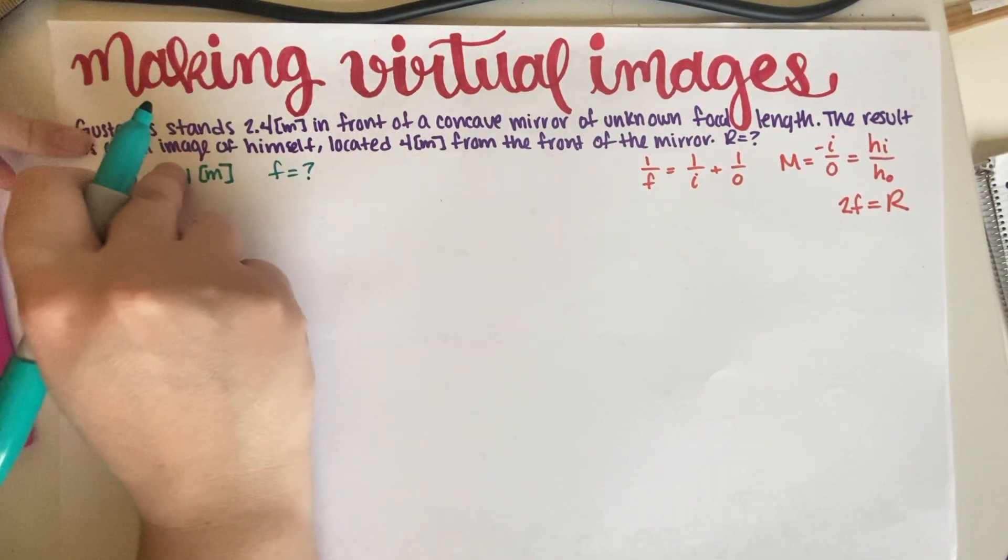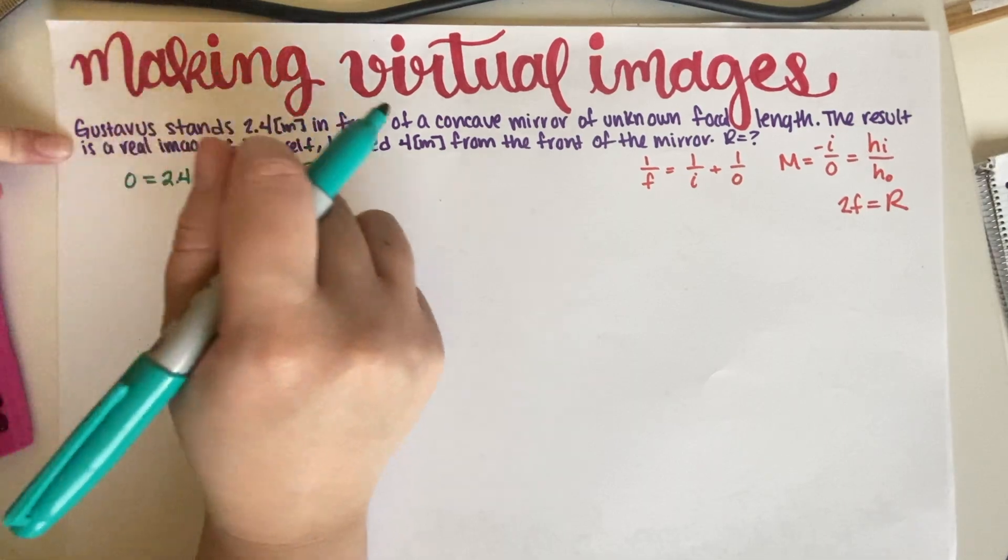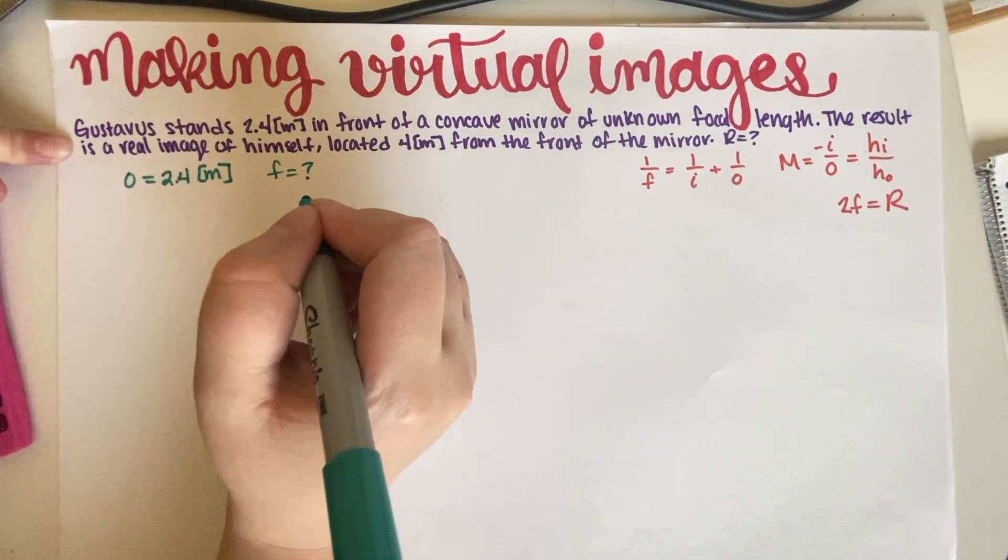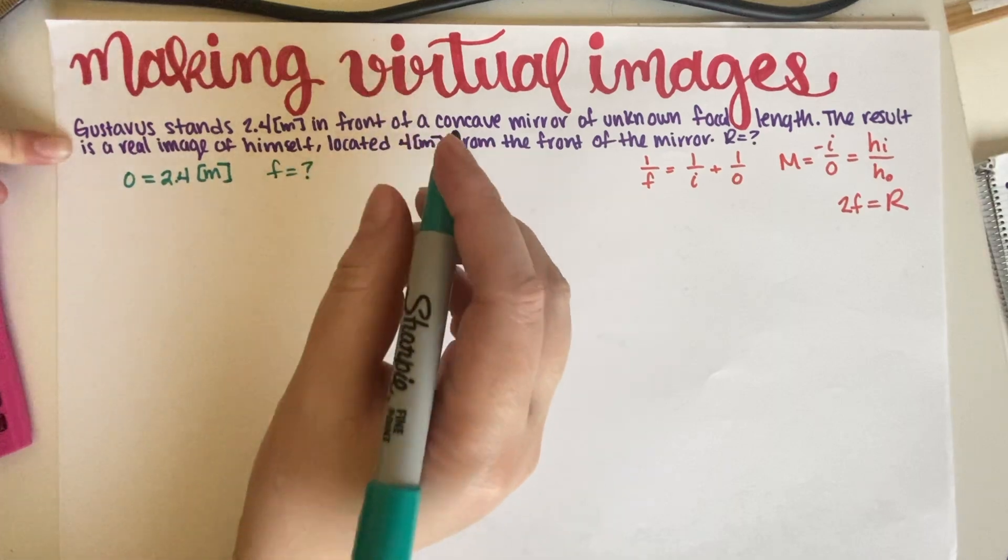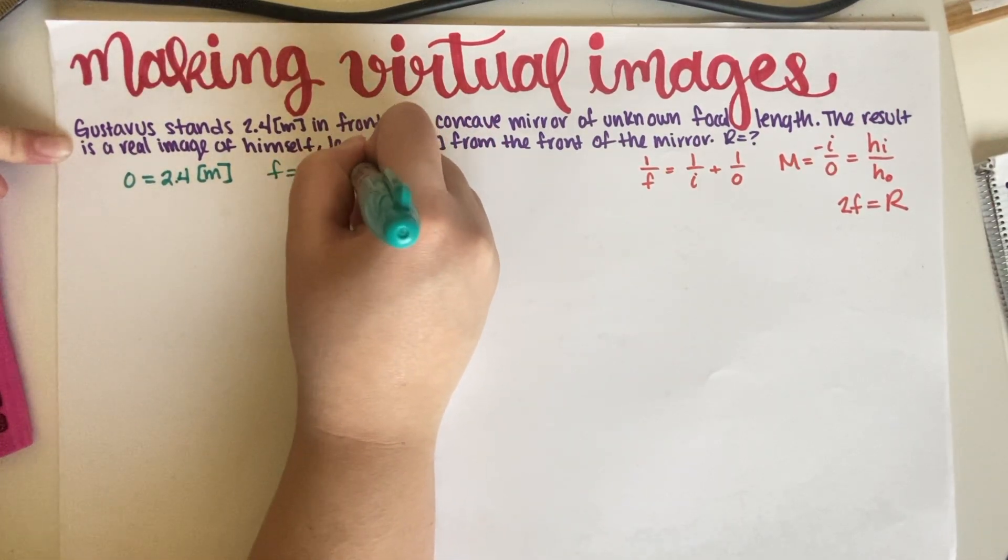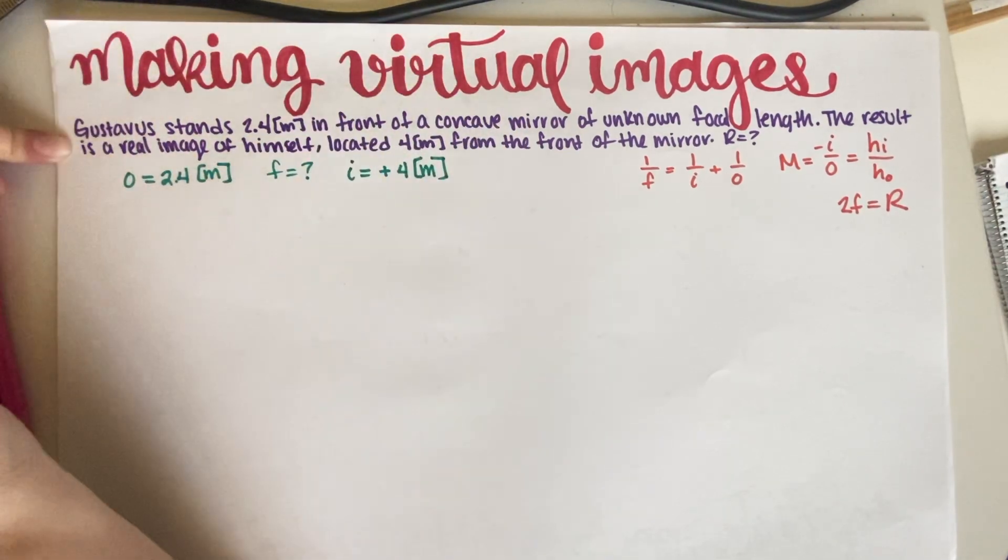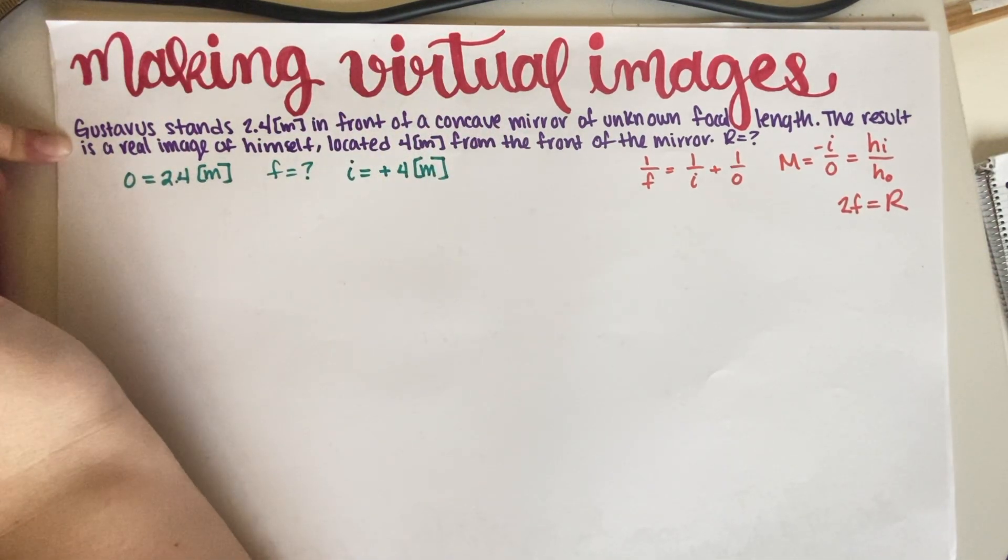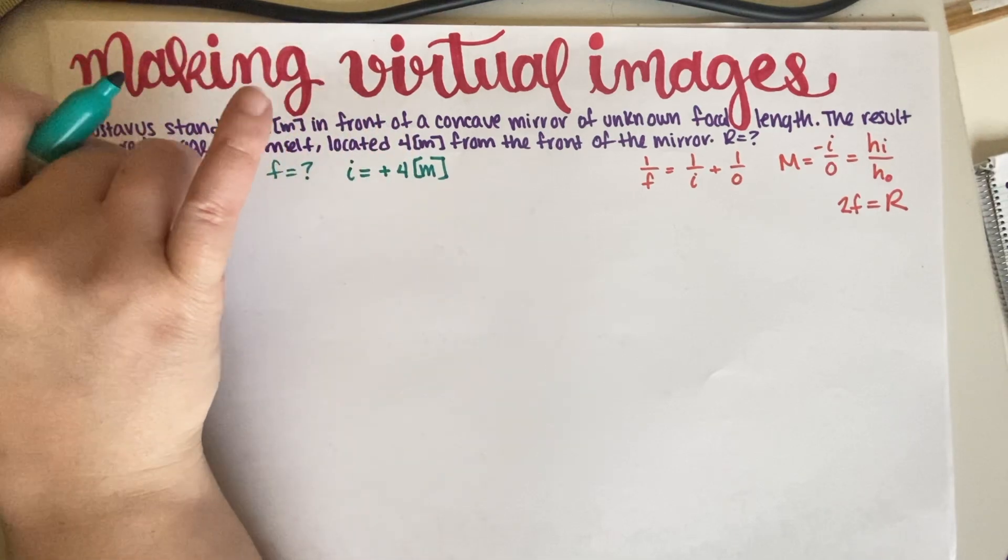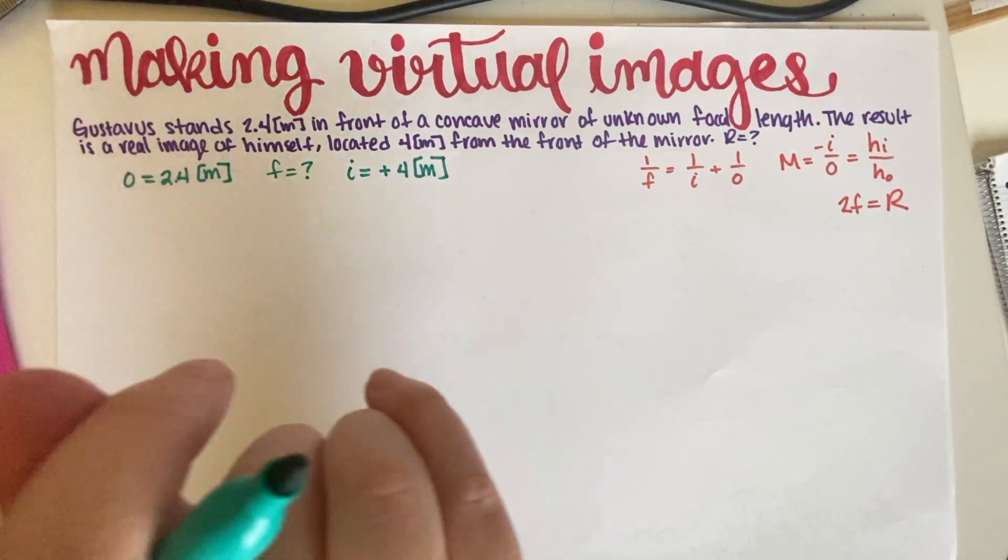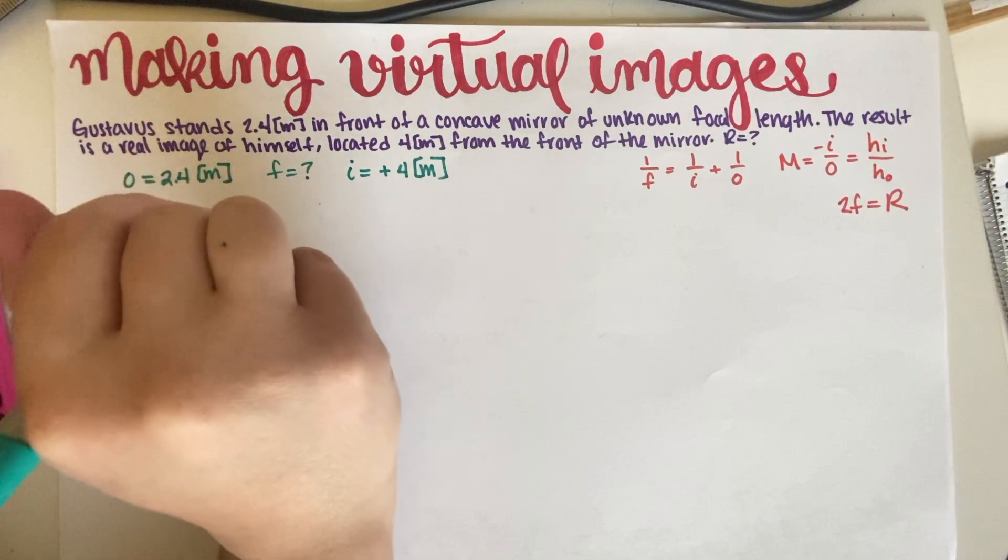And the result is a real image of himself located 4 meters from the front of the mirror. So our image is positive 4 meters like this, because we are in front of a concave mirror, so it's positive. And then we have to find R.